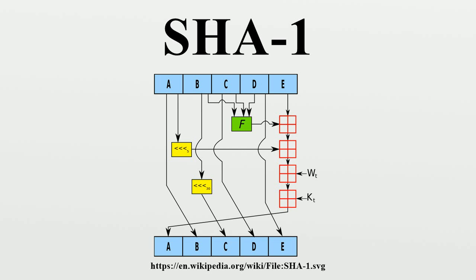In early 2005, Raymund and Oswald published an attack on a reduced version of SHA-1 to 53 out of 80 rounds, which finds collisions with a computational effort of fewer than 2^80 operations. In February 2005, an attack by Xiao Yun Wang, Yik and Lisa Yin, and Hongbo Yu was announced. The attacks can find collisions in the full version of SHA-1, requiring fewer than 2^69 operations. Their analysis was built upon the original differential attack on SHA-0, the near-collision attack on SHA-0, the multi-block collision techniques, as well as the message modification techniques used in the collision search attack on MD5.